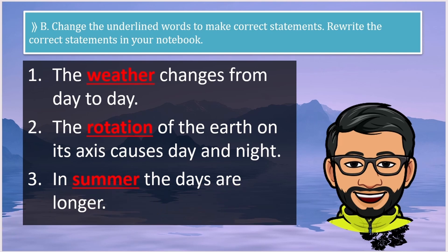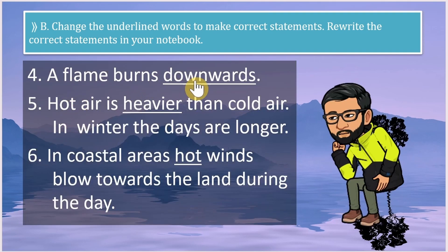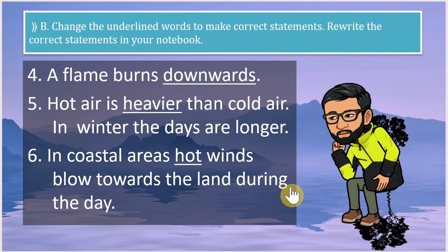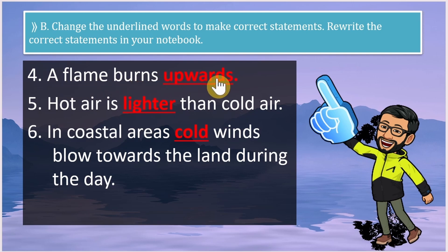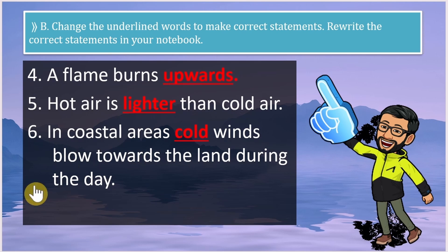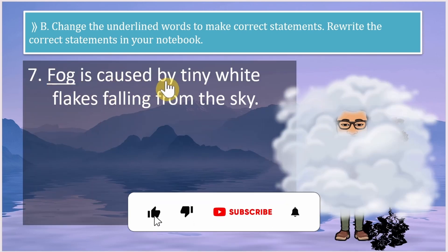More corrections: 'A flame burns downwards' — no, a flame burns upwards. 'Hot air is heavier than cold air' — this is also wrong; hot air is lighter than cold air. 'In coastal areas hot winds blow towards the land' — it should be cool winds. So the corrected statements are: a flame burns upwards, hot air is lighter than cold air, and in coastal areas cool winds blow towards the land during the day.